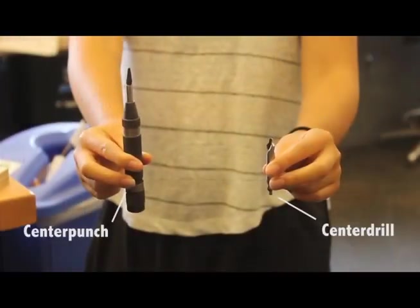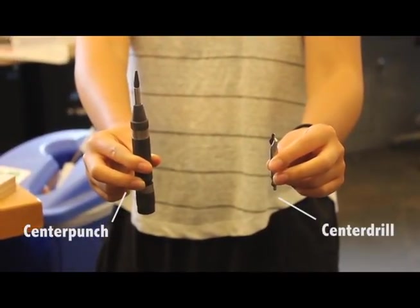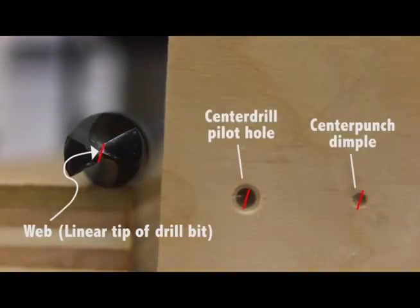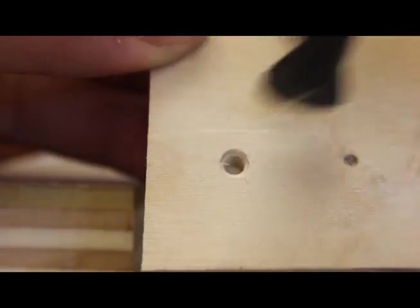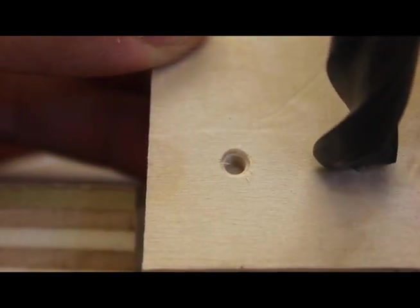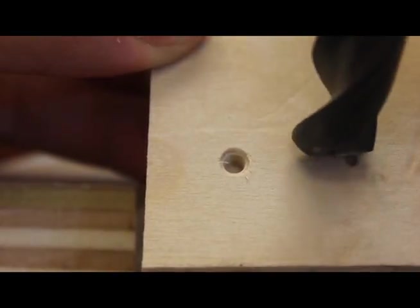In most cases, both methods can be used to lead in your drill bit, but you cannot use a center punch if the dimple created is too small compared to the web or the linear tip of the drill bit to be used. If you plan to center drill, do it once your part is clamped to the table.